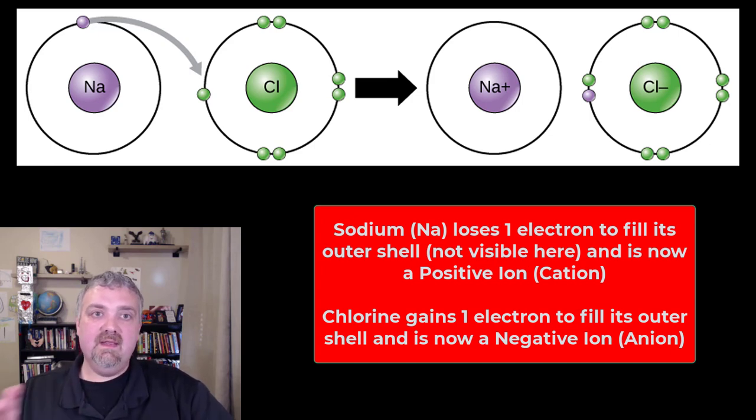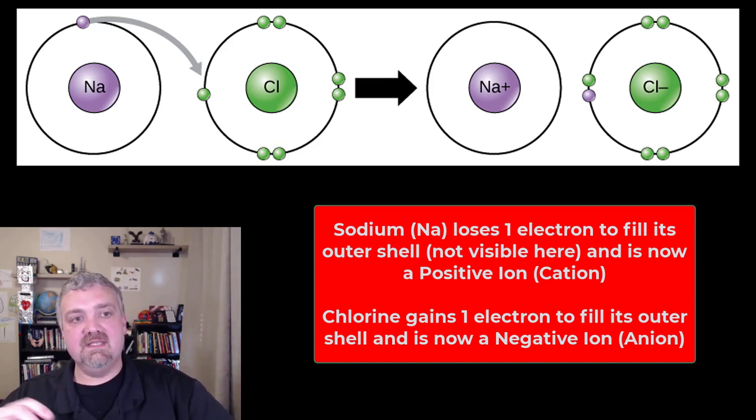Sodium has that one electron. It has two options. If it wants to complete an octet and fill that outer shell, it either needs to gain seven electrons or lose one. Much easier to lose one. So sodium is going to be made happy by giving up an electron. That chlorine has seven electrons. It can only be happy by giving up seven or gaining one. Obviously gaining one makes the most sense.